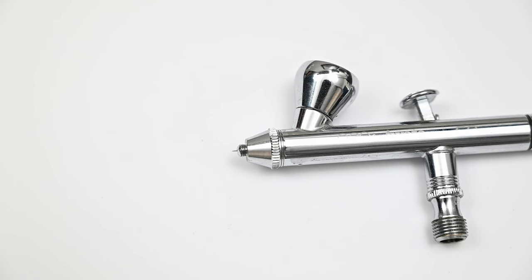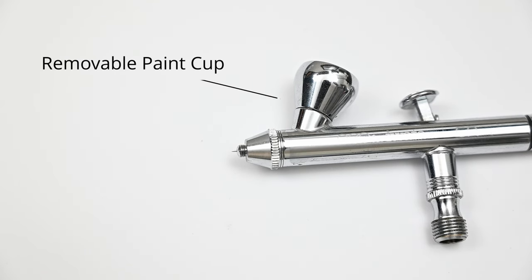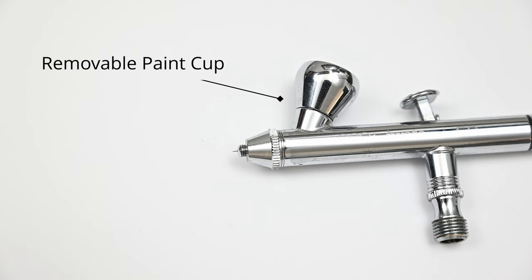The first interesting thing about the Neo for Iwata is that it has a removable paint cup. For an airbrush at this price this is almost unheard of. This is a feature you'd see in some higher end airbrushes like the Harder and Steambeck Infinity.